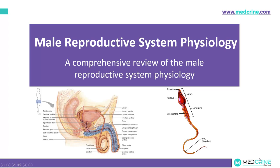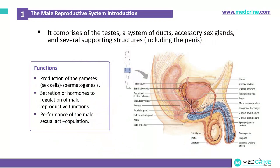Welcome again to MedCrain. In today's video we shall be looking at the physiology of the male reproductive system. The male reproductive system comprises the testicles, a system of ducts, accessory sex glands, and several supporting structures including the penis. Its function is the production of gametes known as sperm cells through a process known as spermatogenesis, secretion of hormones that regulate male reproductive function, and the performance of the male sexual act known as copulation.